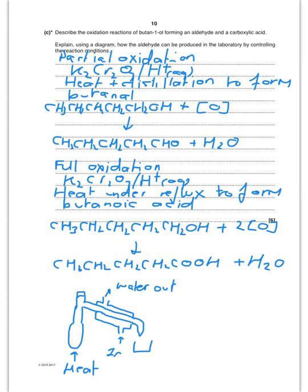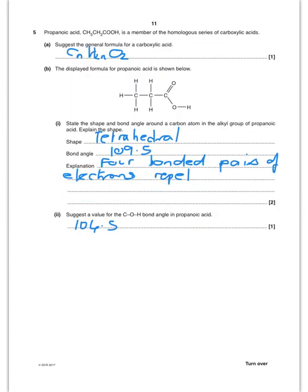So now we're going to move on to oxidation of butan-1-ol. So obviously you remember you can do a partial oxidation where you will form the aldehyde. In this case butanal. Or you can do a full oxidation where you reflux to form butanoic acid. I've put the equation there. And a very simplistic diagram of how you would carry out the distillation.